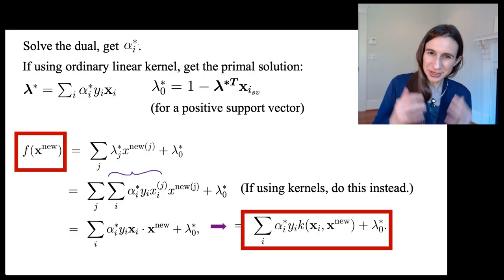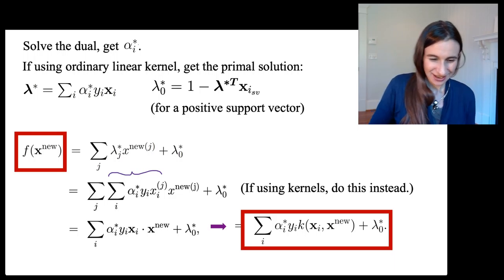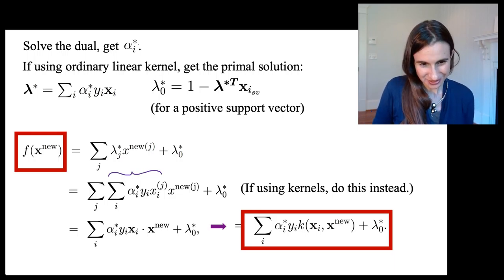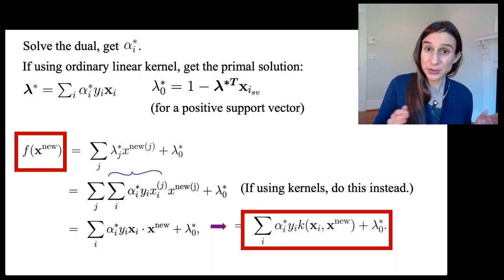This is one of the key equations I need. I'm missing just one thing—I haven't told you what lambda_zero star is yet. Let's do that, but in any case, we've got most of it already.